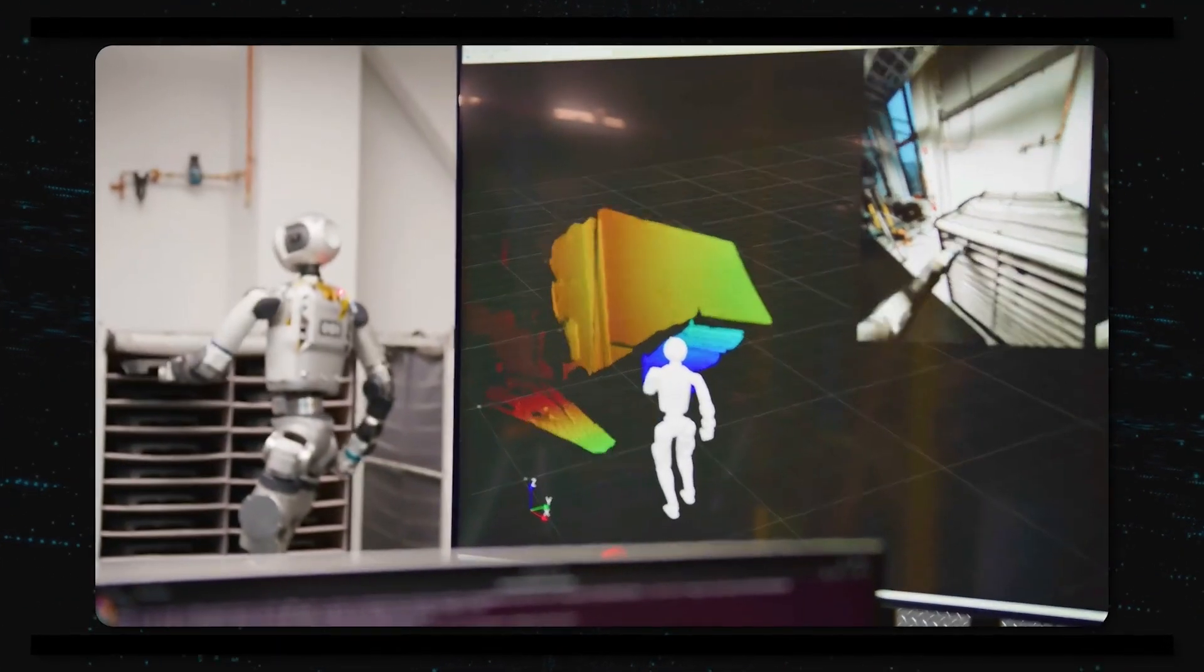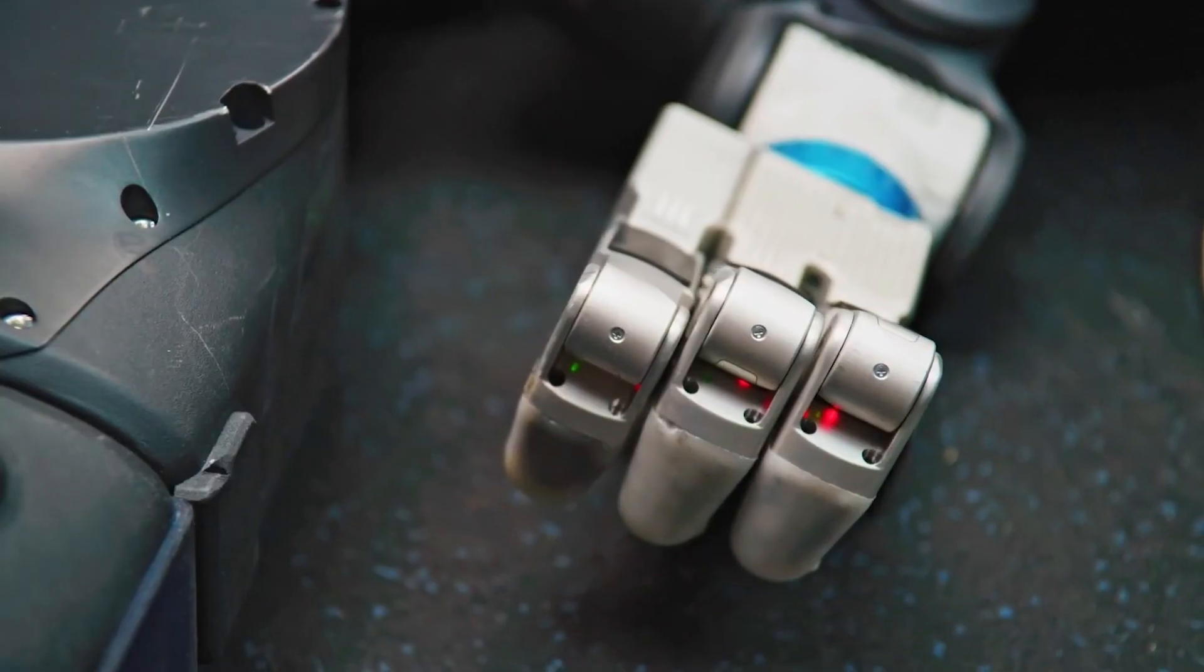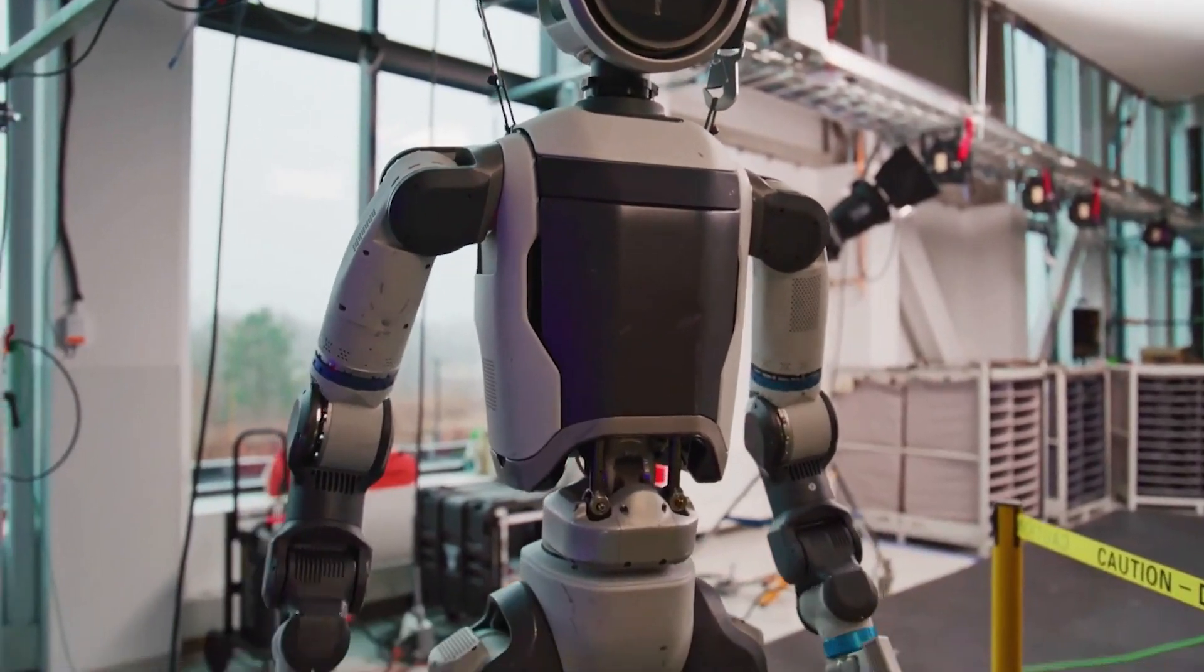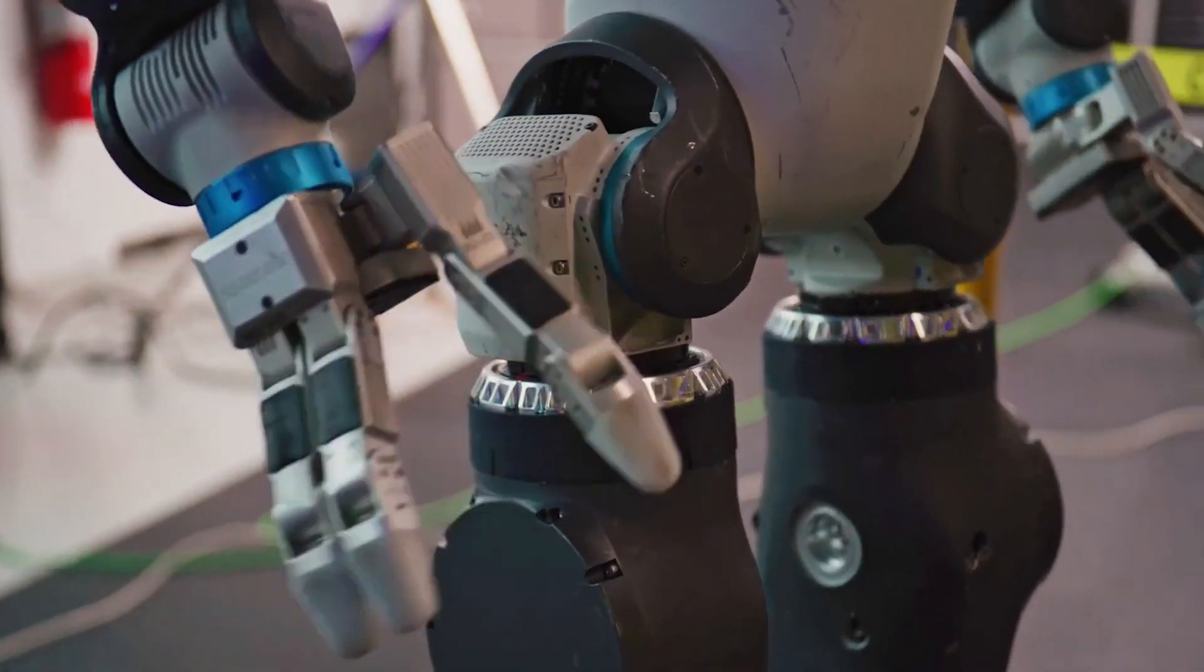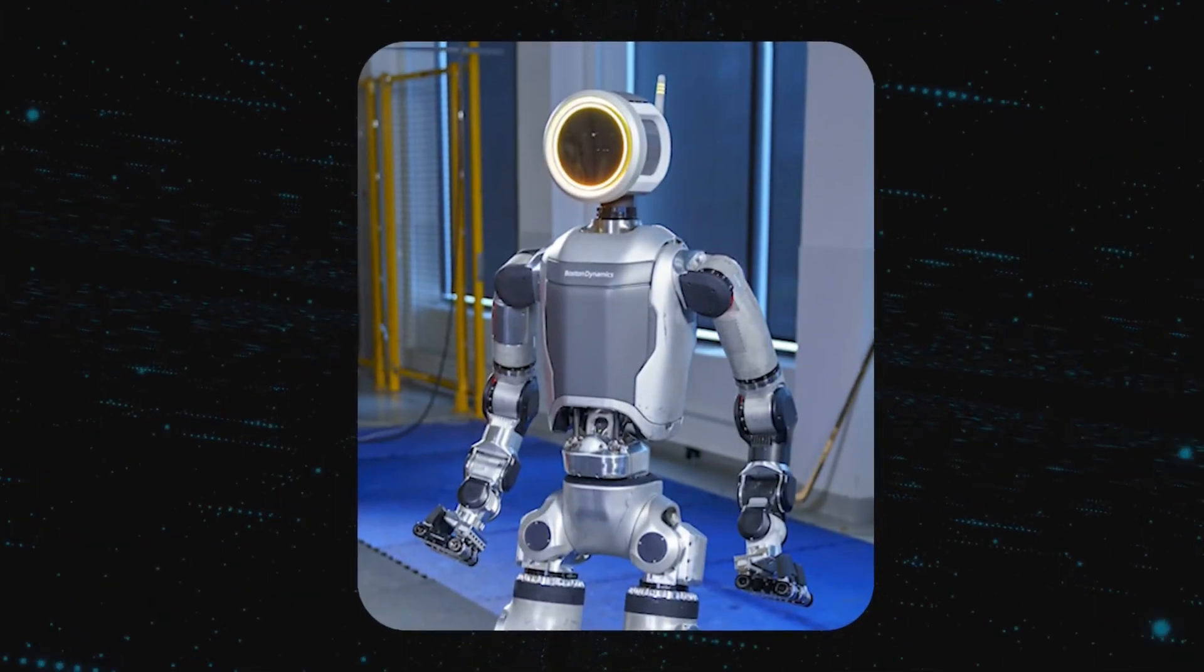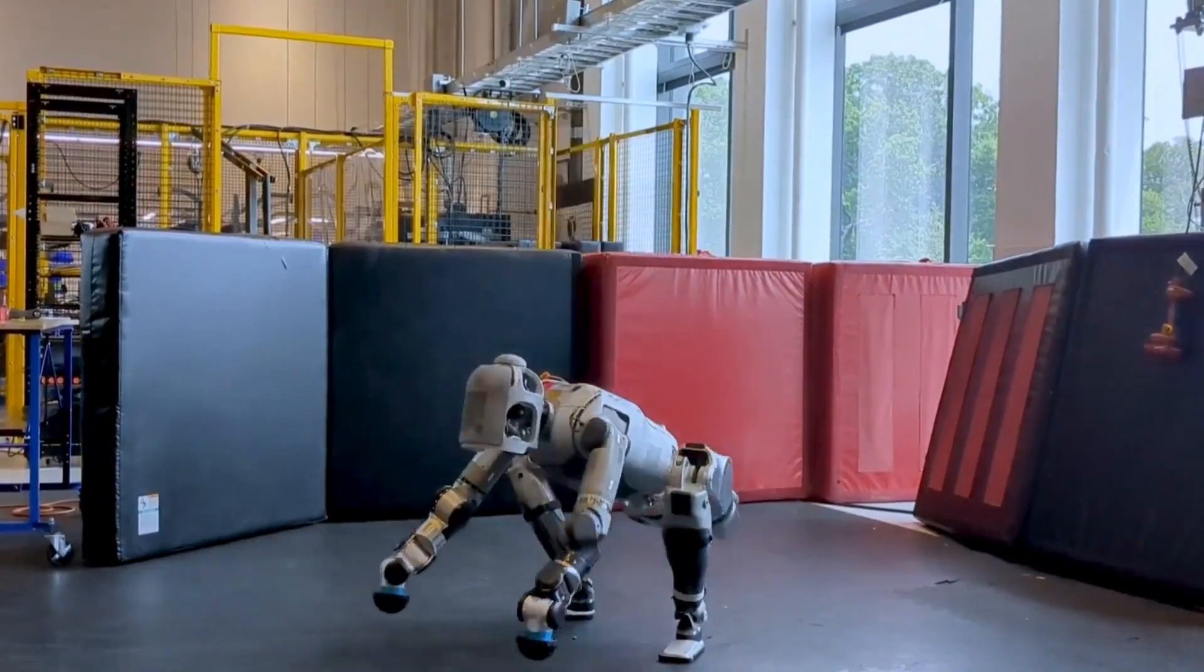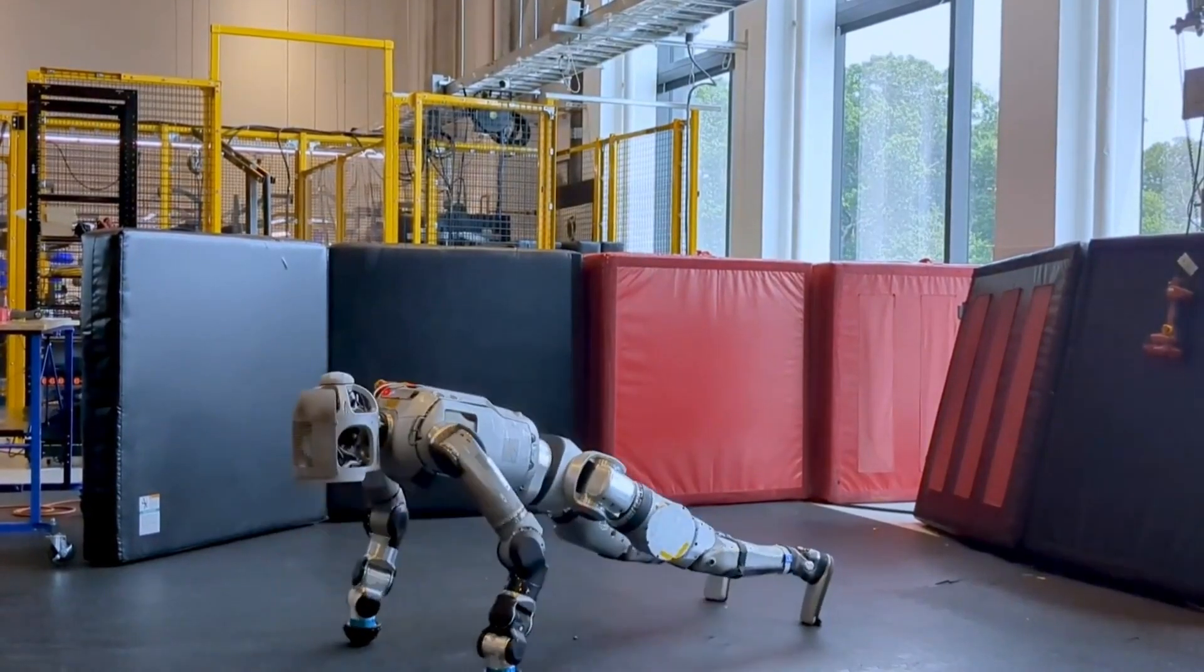If it reaches for an object and feels unexpected resistance, it recalculates and tries again, rather than forcing the motion. With this improved perception and control, it can interact with the world in a meaningful way. And that's exactly what's needed for real-world tasks.